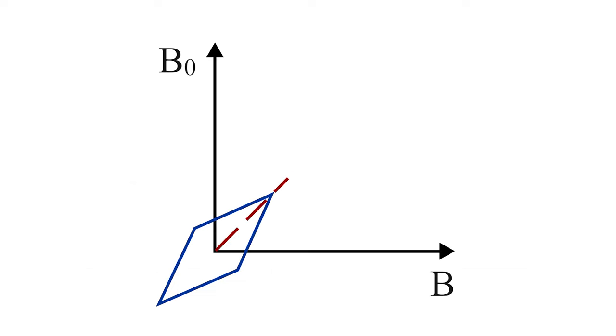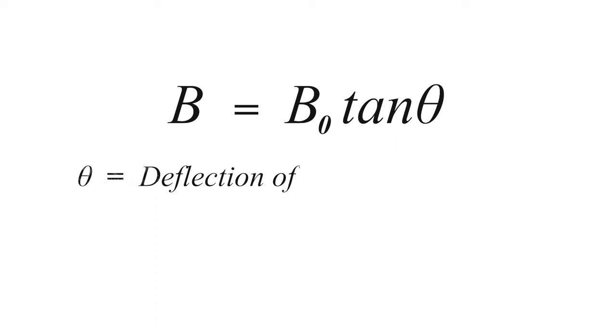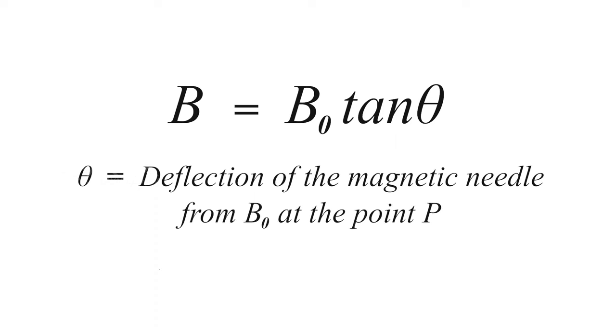The magnetic field with the distance x along the axis of the circular coil carrying current varies as shown. If you arrange the plane of the coil parallel to the horizontal component of Earth's magnetic field B0, then from the tangent law, we can write B = B0 tan θ, where θ is the deflection of the magnetic needle from B0 at point P, and B0 = 3.5×10⁻⁵ tesla.